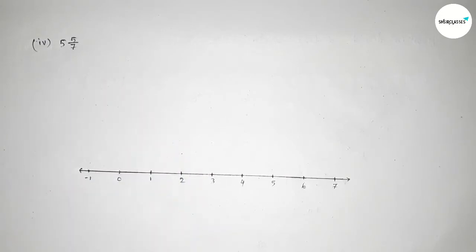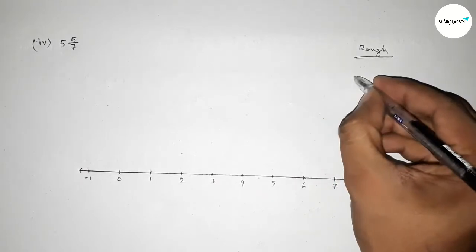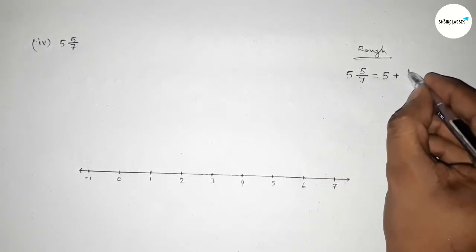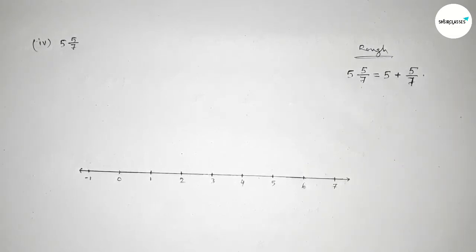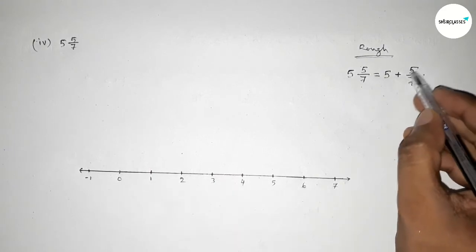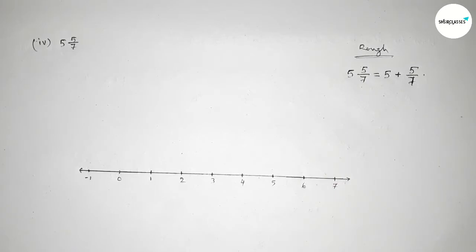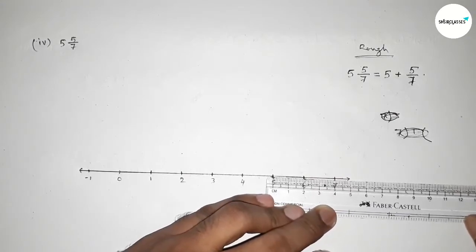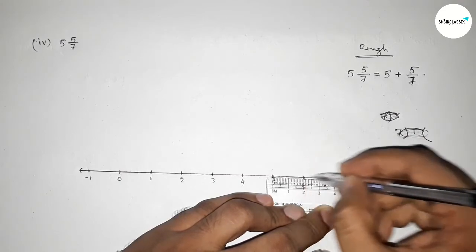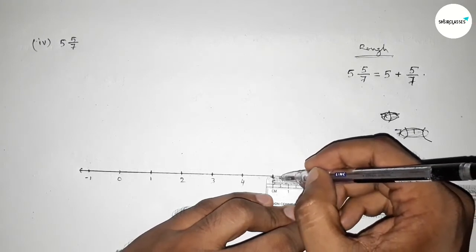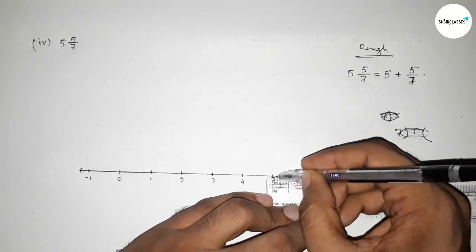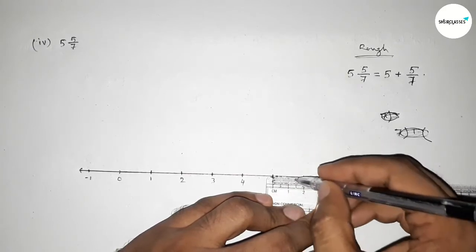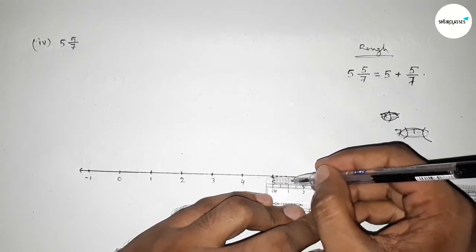Here given five and five over seven; similarly we can write five plus five over seven. First counting to five — this is total five units in length — and now we have to represent between five and six. Dividing the distance between five and six into seven equal parts, the length of each part will be approximately 2.9 units.